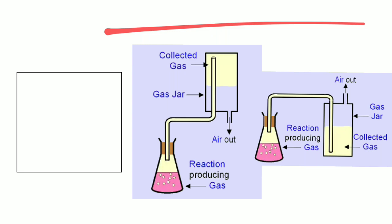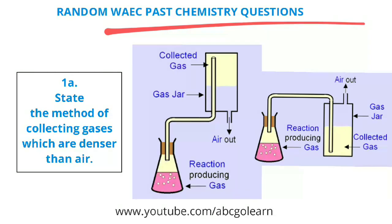The first question: state the method of collecting gases which are denser than air. When you're talking about gases that are denser than air, you should know that the mass-to-volume ratio of that gas will be higher than that of air. For this, we use what we call downward delivery or upward displacement of the air. Someone could find this confusing, so I want to explain why we call it downward delivery and upward displacement.